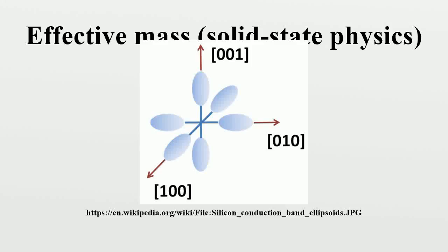In solid-state physics, a particle's effective mass is the mass that it seems to have when responding to forces, or the mass that it seems to have when en masse with other identical particles in a thermal distribution.